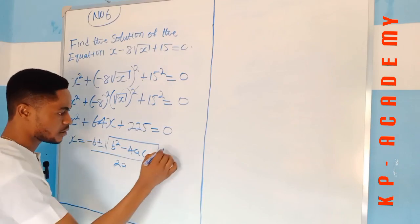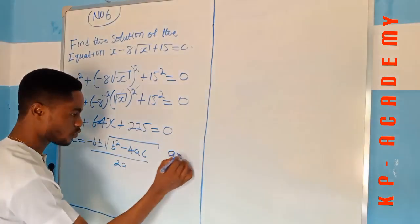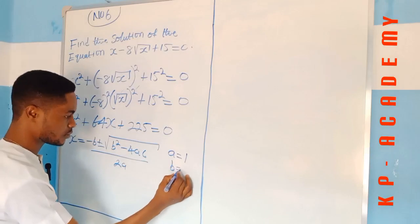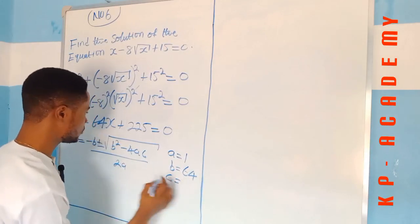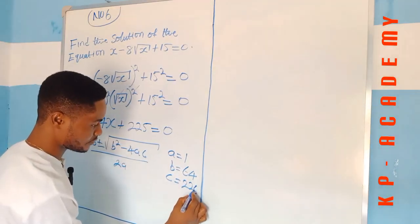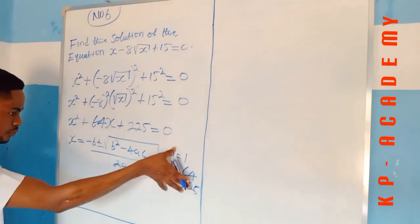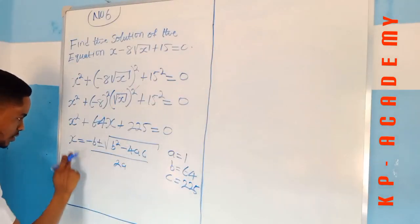And of course, where a in this case is equal to 1, b is equal to 64, and c is equal to 225. So we're going to plug in these values into this equation.